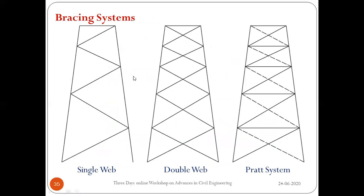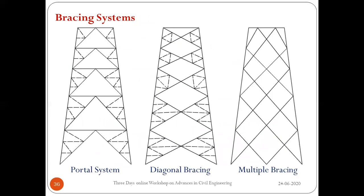Bracing types vary depending on tower size: single web, double web, Pratt system, portal system, diagonal bracing, multiple bracing, or combinations. In the field, a combination of inverted-K (portal system) and diagonal system is commonly used — inverted-K at the bottom two or three panels and diagonal above. Dotted lines represent redundant members, which help reduce the effective length of main members such as legs, bracings, or belts.